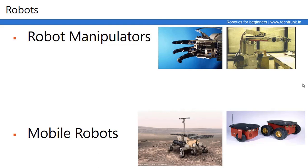Another type is the Mobile Robot, which can move from one place to another and is generally used for surveillance, security, finding objects, and domestic tasks. Robots are also used as Servant Robots, Solar Robots, Search Robots, Mars Rover Robots, and Space Rover Robots. These mobile robots can move using legged locomotion or wheeled locomotion, and quadcopters can also be classified as a type of Mobile Robot.